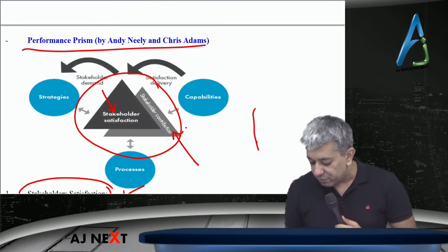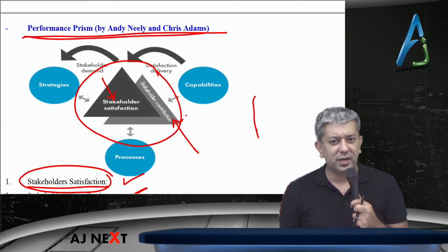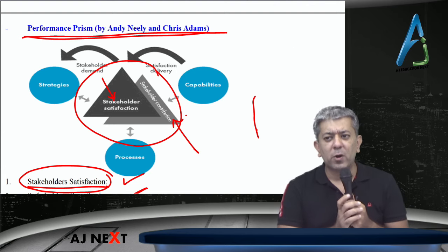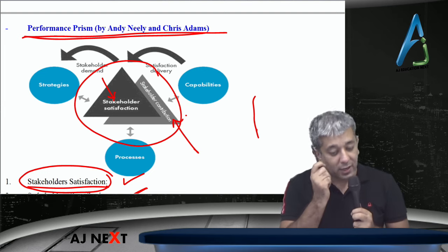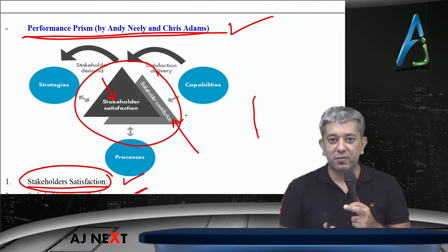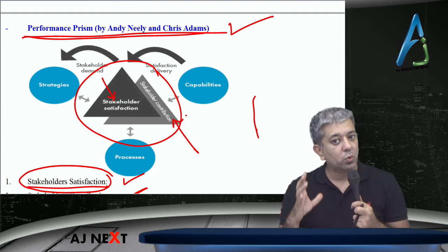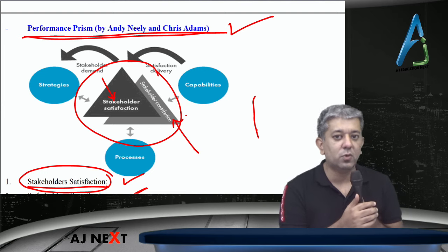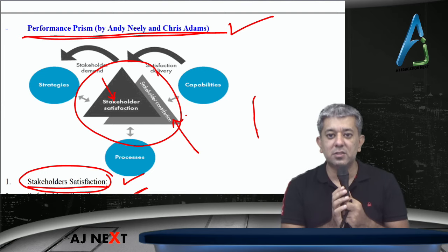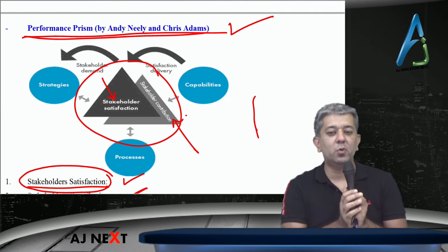If performance prism questions come, remember: they will say the existing system generates too much data and we cannot use it, and we are only concentrating on shareholders and customers. That is a hint to use Performance Prism. If they say internal and external, then Performance Pyramid. Please remember these are only revision videos and are not substitutes for your original lectures, theory, and case studies. This is just a recap.